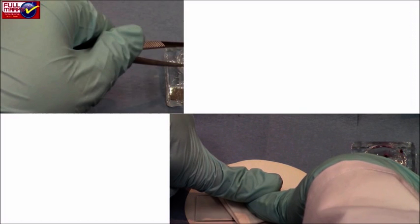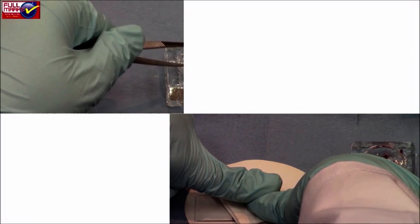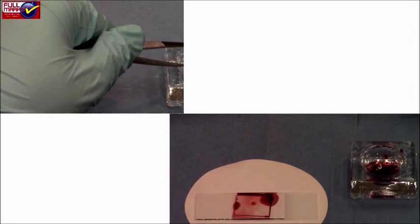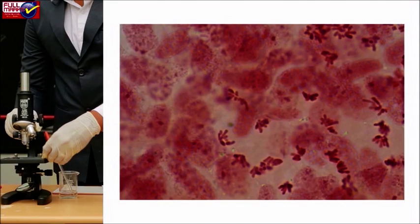Press the material with the tip of the finger and remove the excess stain which comes out of the side of the cover slip. Place the slide on the stage of the microscope and search for the dividing cells using lower magnification. When dividing cells were located, observe them under higher magnification.